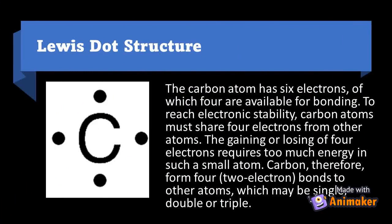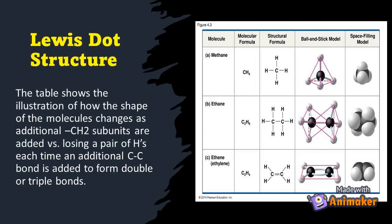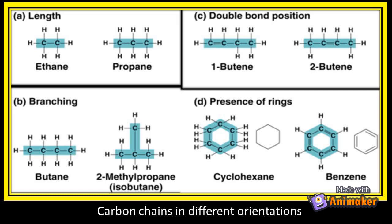Regarding the Lewis dot structure, the carbon atom has six electrons, of which four are available for bonding. For rich electronic stability, carbon atoms must share four electrons from other atoms. The gaining or losing of four electrons requires too much energy in such a small atom. Carbon therefore forms four or two electron bonds to other atoms, which may be single, double, or triple bonds. Carbon chains form the skeleton of most molecules and also vary in length and shape. Examples of carbon chains in different orientations include length, double bond position, branch and chain, and ring chain.